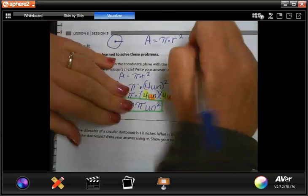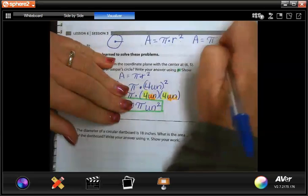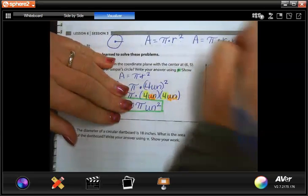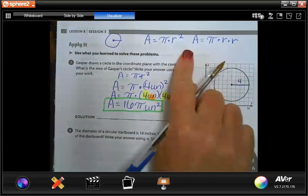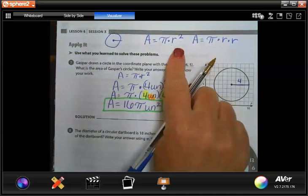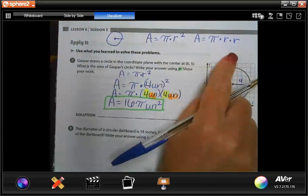And really what that means is it's pi times r times r. When you square anything, a number or a letter, it's always times itself.